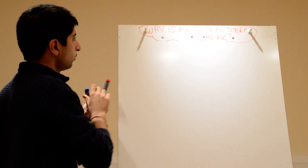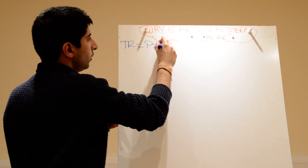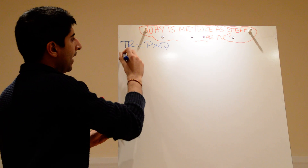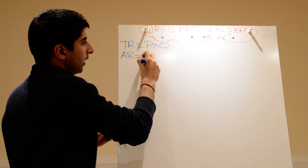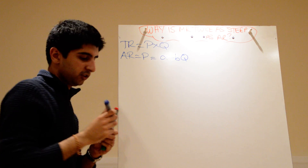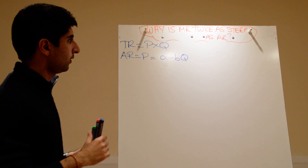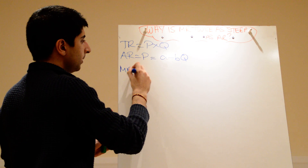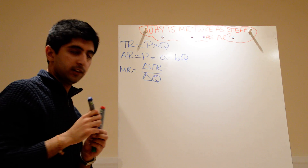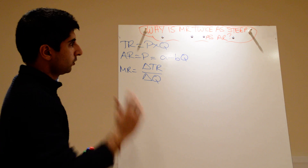Let's start off with basic knowledge of total revenue. We know that total revenue is just the price of a good or service times the amount sold of it. We also know that average revenue is the price, and the price can also give us a demand function of this form — a linear demand function, a range of quantities at given price levels. We also know that marginal revenue is just the change in total revenue over the change in quantity — that's what marginal revenue tells us.